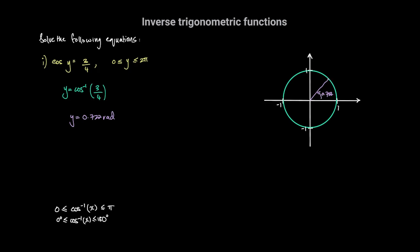The question is: is there any other angle in the range 0 to 2 pi radians where we get the same x-coordinate as this point on the unit circle? The answer is yes — if we mirrored this point across the x-axis, it would have the same x-coordinate. This other angle is 0.722 radians going in the clockwise direction, so that will be negative 0.722 radians. However, y ranges from 0 radians to 2 pi radians.